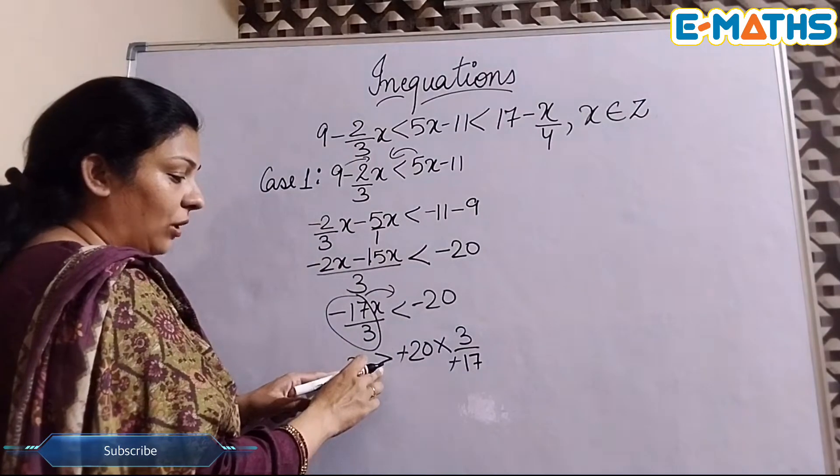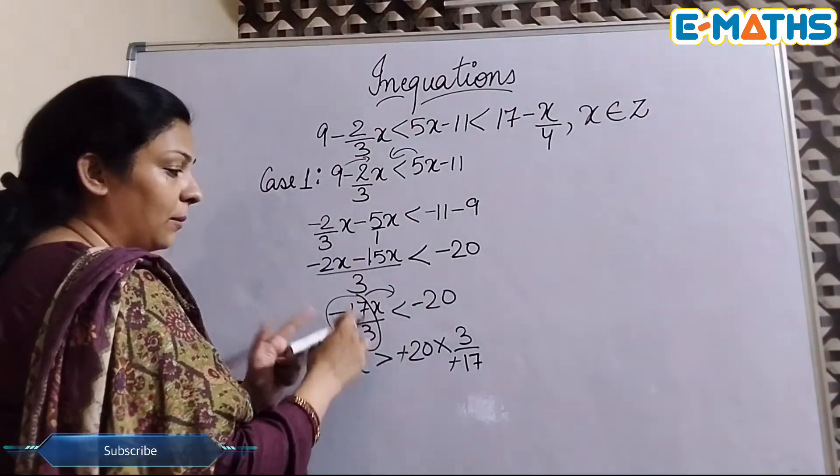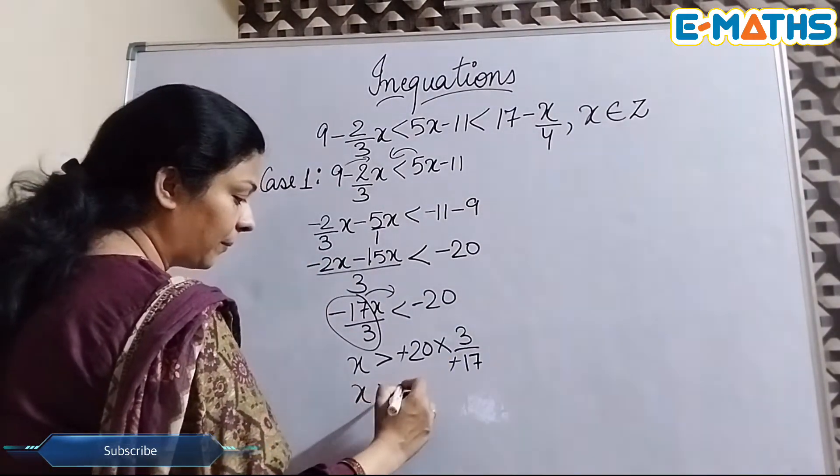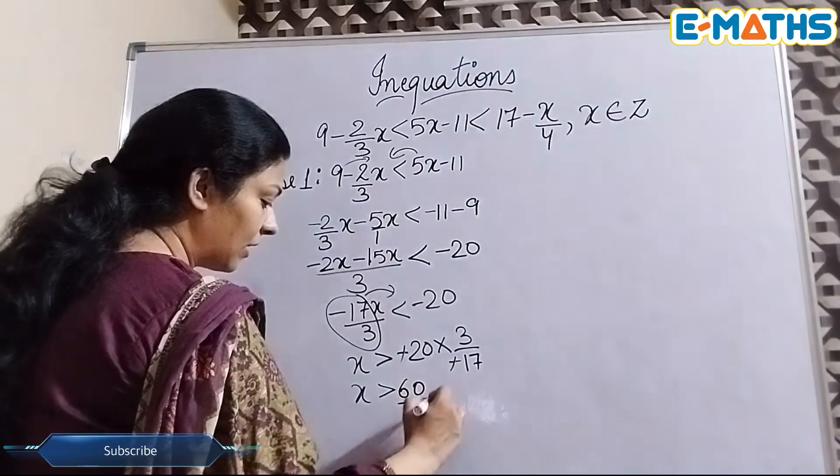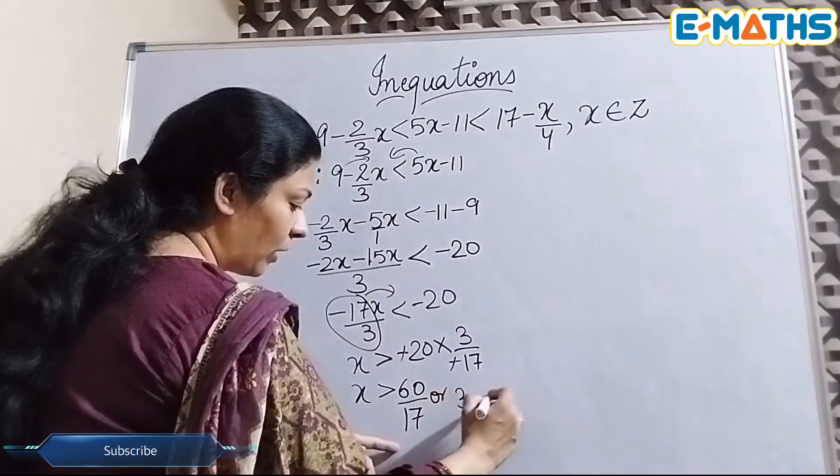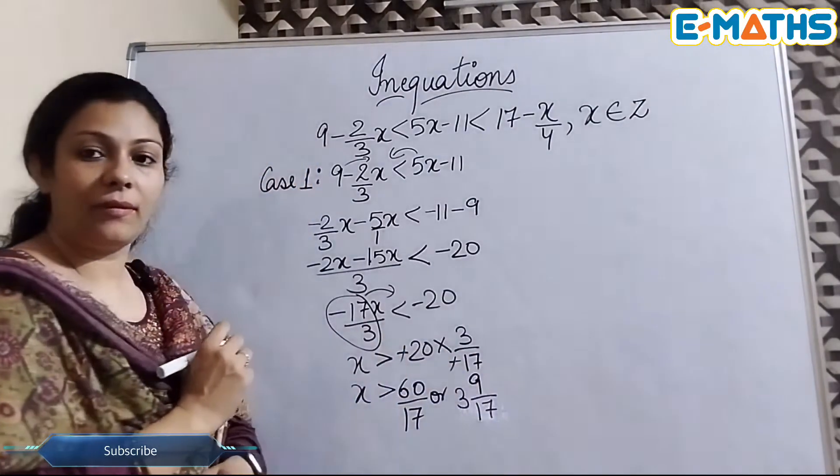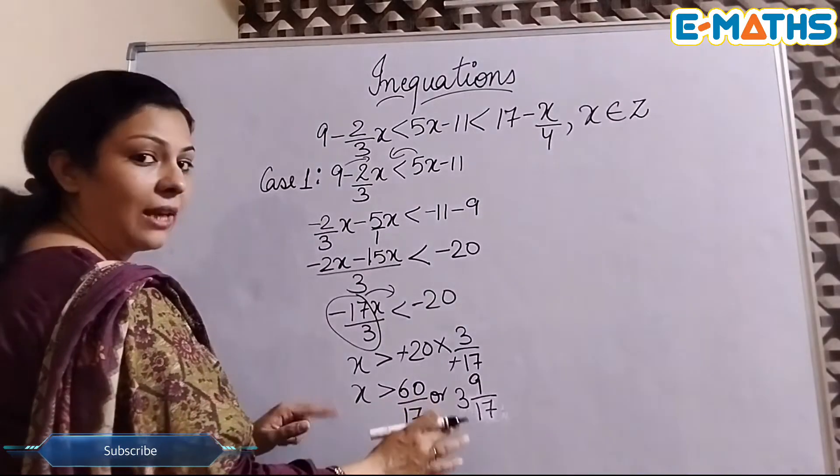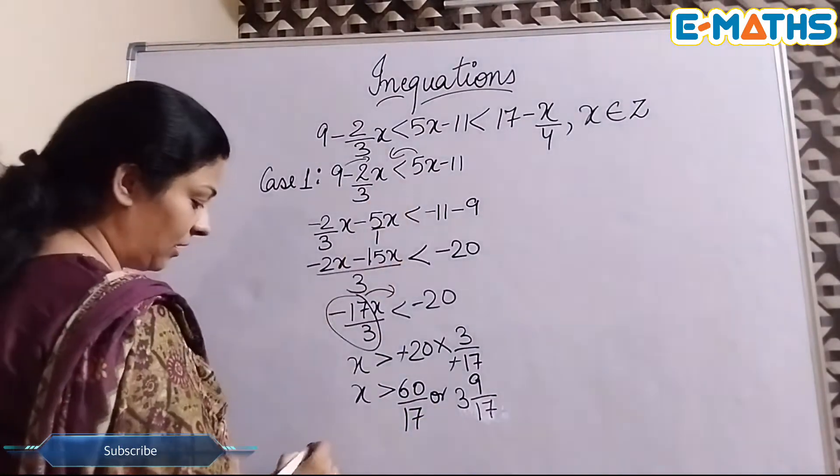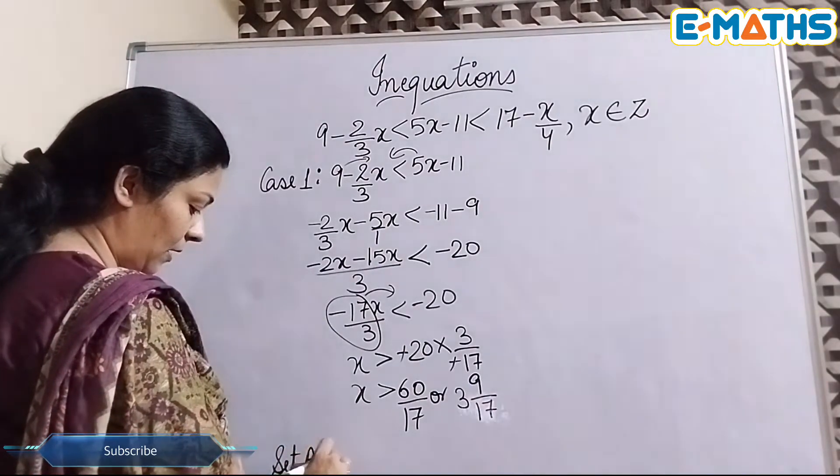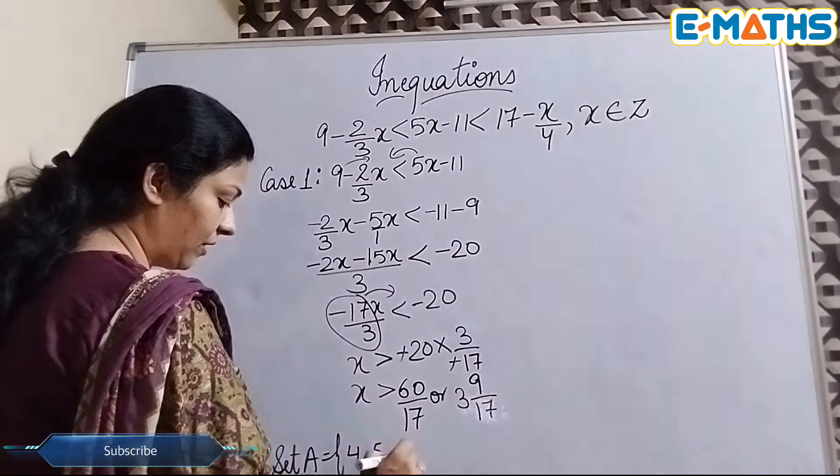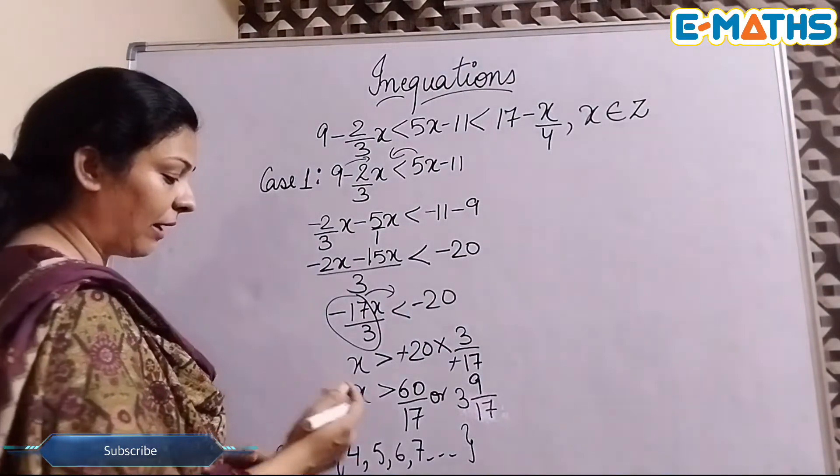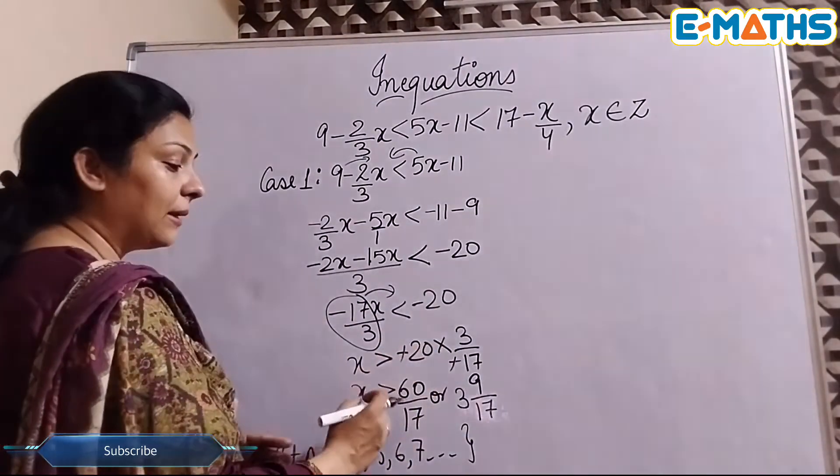So I've changed the sign of inequality. This remains the same. This entire term, when moved on to the other hand side, got's reciprocal. So here we have x > 60/17, or you can also say 17 times 3 is 51, so 3 9/17. So we have the value of x in case 1 as this. Now here the value of x is greater than 3 9/17. So we will be taking the integers in this. So set A will be starting from 4, 5, 6, 7, and so on. It keeps on moving on the right hand side because all are going to be positive because x is bigger than this 3 9/17.